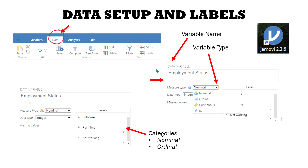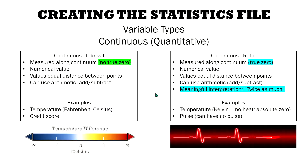In this case, I have in front of you here Jamovi software, and before you even analyze the data, you are going to need to know how to label your variables — in this case, nominal, ordinal, or continuous. So let's go ahead and look at these variable types.